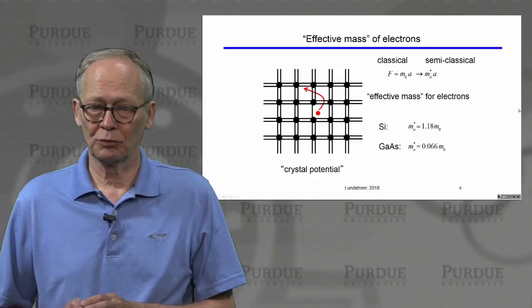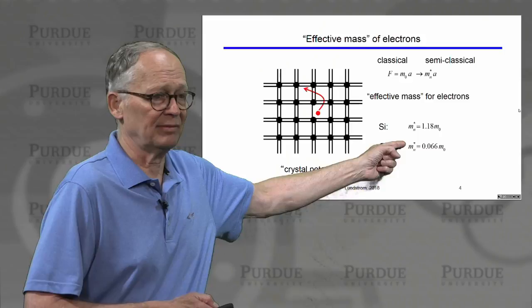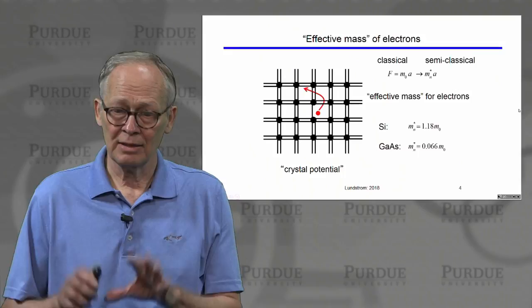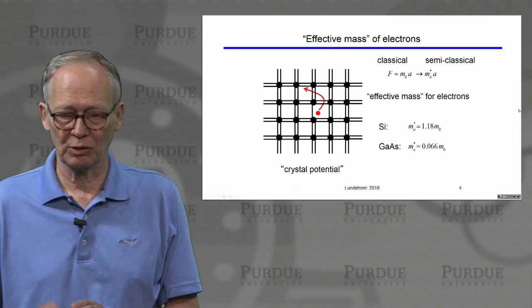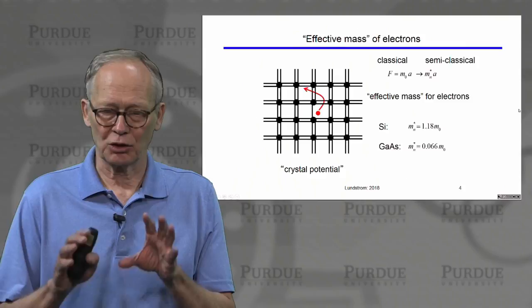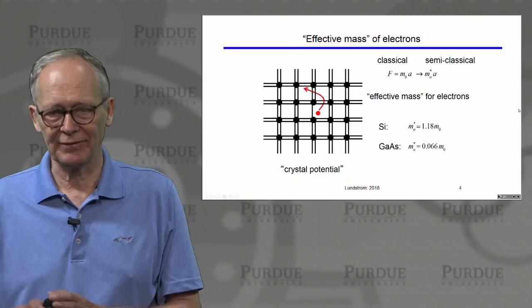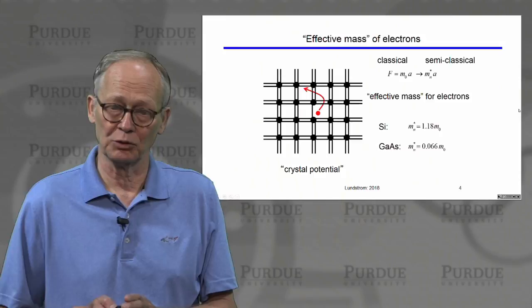For example, in silicon the effective mass of an electron is just a little bit heavier than its rest mass in vacuum. In gallium arsenide, the effective mass is much lighter than the rest mass in vacuum. We understand and can measure these properties very well. For this course, we'll simply accept that we can describe electrons and holes using Newton's laws with the appropriate effective mass. Those interested can find more in textbooks or online, but we'll keep it at this level.